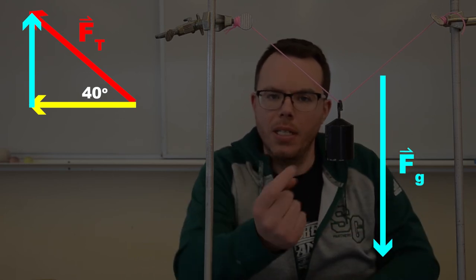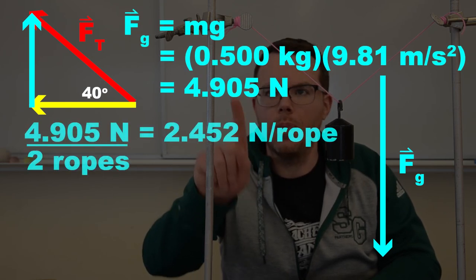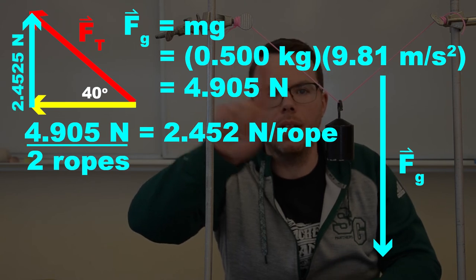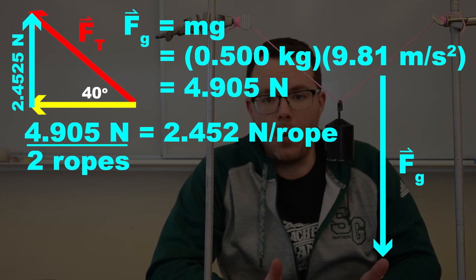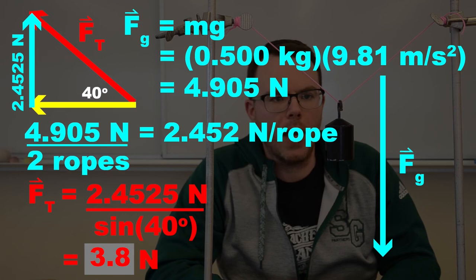So what I could do is take the force of gravity of the mass and divide it by two and make that equal to this upwards pulling y component of the hypotenuse of that triangle. Then I can solve for the hypotenuse using some simple trig. I don't have to draw that with a ruler and protractor.